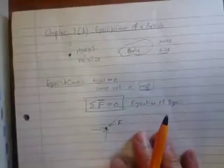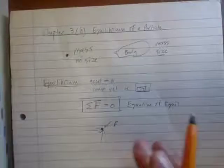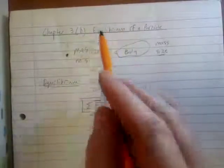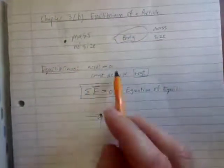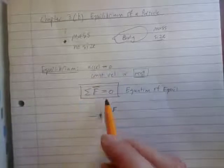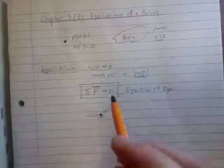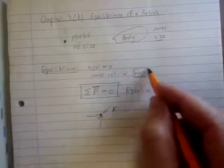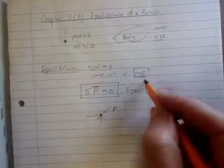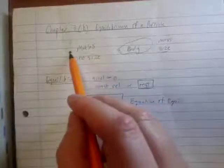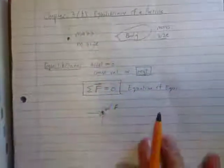So, in this video, what I wanted you to just pick up is, what does equilibrium mean? It means that acceleration is zero. It means that all the forces acting on the object or the particle is equal to zero. But what we are specifically looking at is that our particle is at rest. And I also wanted you to understand what is the difference between a particle and a body. Okay? So, that's good for now.